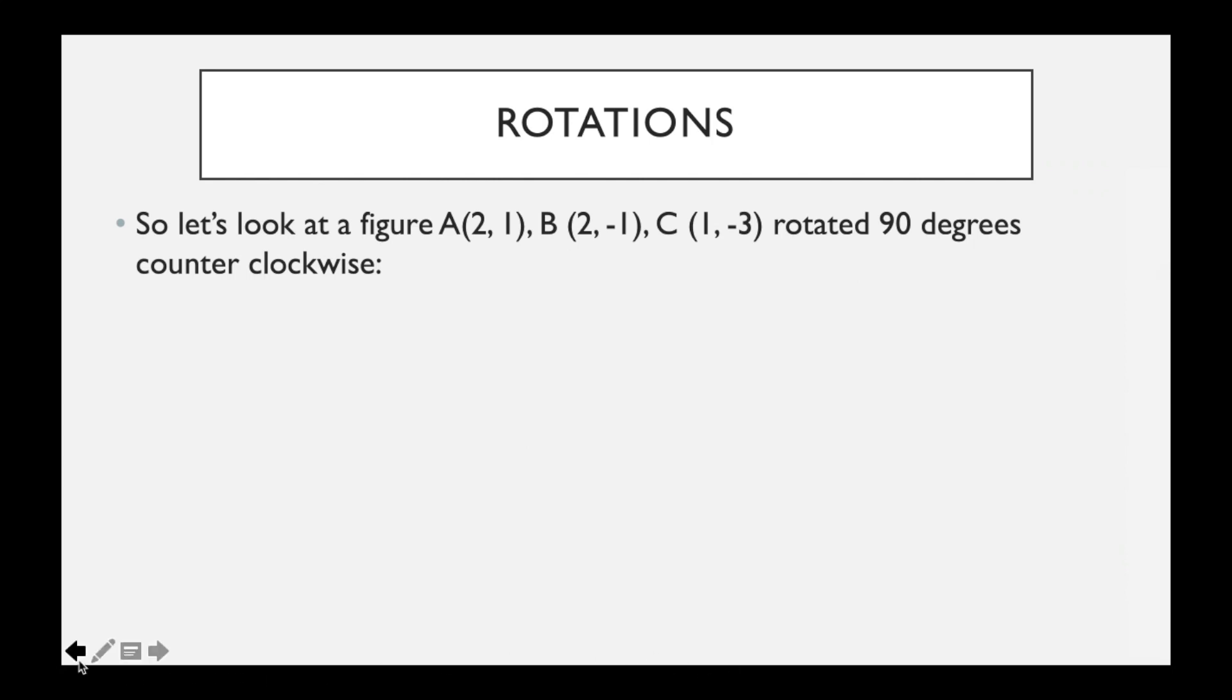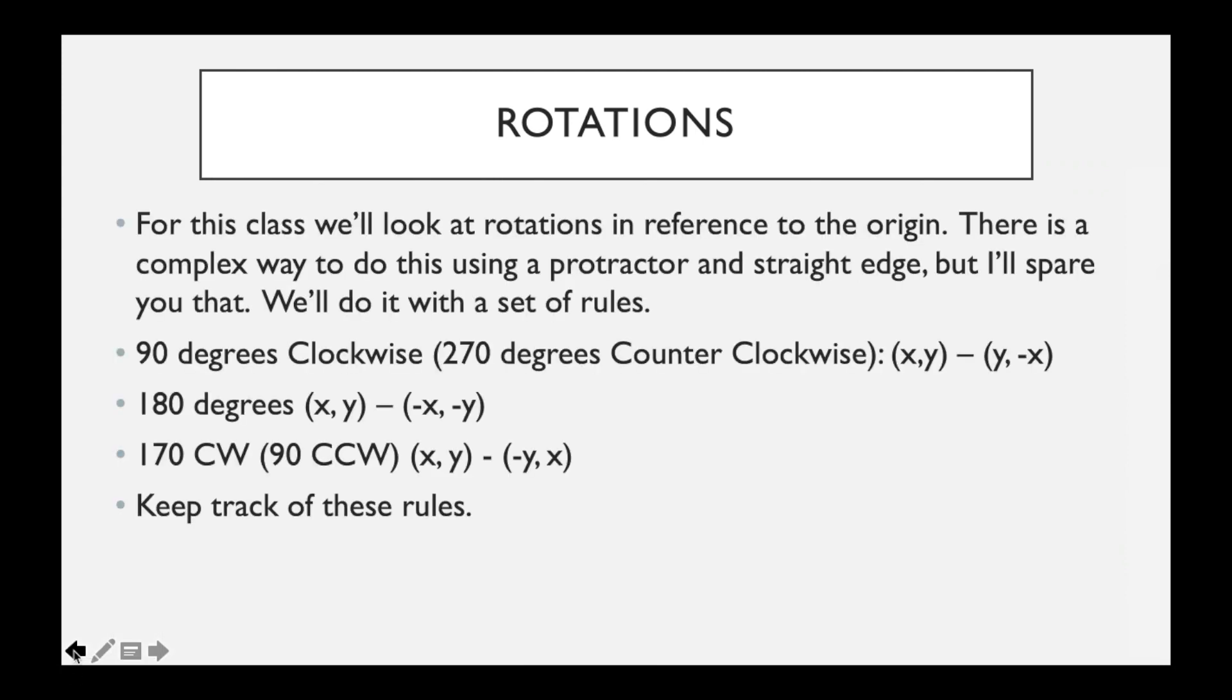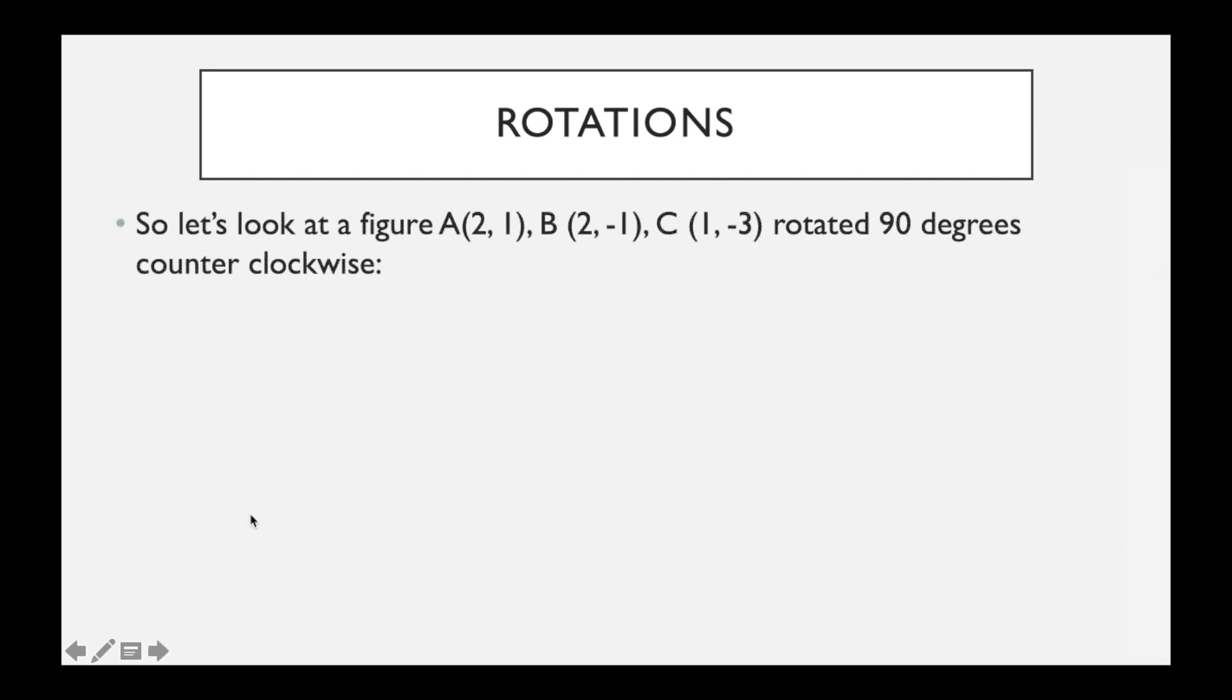If we jump back really fast here, you can see that if we're going 90 degrees counterclockwise, we're going to change each (x, y) coordinate into (-y, x). So (x, y) would become (-y, x). So (2, 1) would become (-1, 2). (2, -1) would become (1, 2). (1, -3) would become (3, 1).